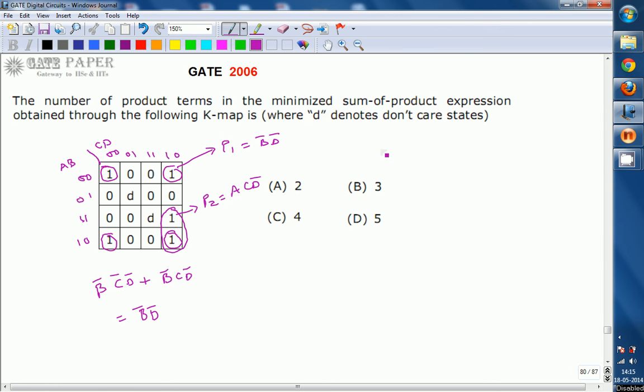That is nothing but SOP expression is going to be consisting of P1 plus P2, which is nothing but B-bar, D-bar plus A, C, D-bar. This is what the expression. For example, it is F. So, the right answer for this question is 2. Answer is 2 product terms will be present. Thank you.